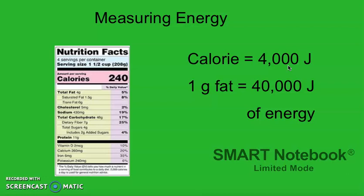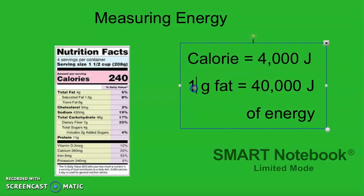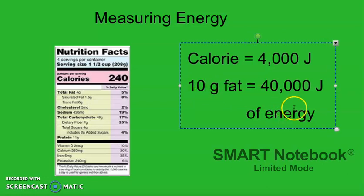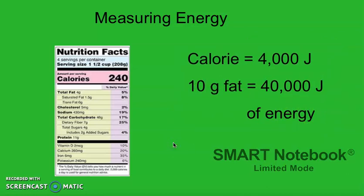And every gram of fat produces about 10,000 calories, which if you have 10 grams of fat, which is what this should say, 10 grams of fat equals about 40,000 joules of energy. So we really take in a lot of potential energy.